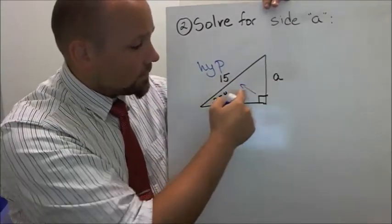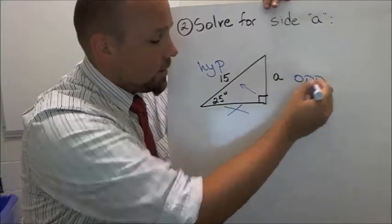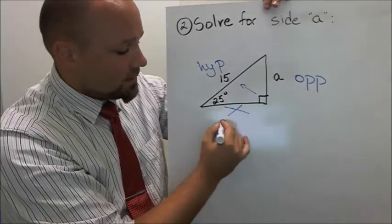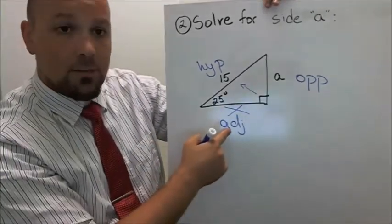So this side right here, well, there's the angle, so this side is opposite. So this side I call opposite. And that leaves this side to be the adjacent. That's the one that I'm not really going to worry about.